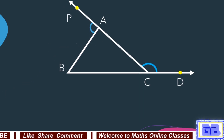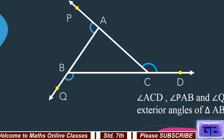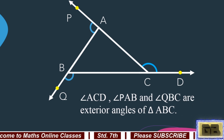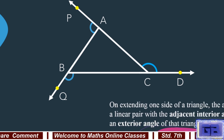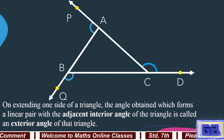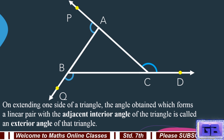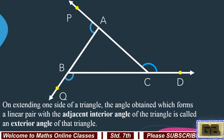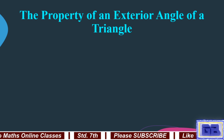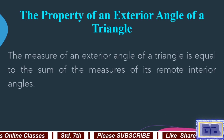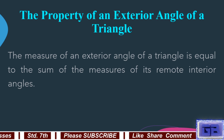Extending other sides, angle PAB and angle QBC are also exterior angles of triangle ABC. On extending one side of a triangle, the angle obtained which forms a linear pair with the adjacent interior angle of the triangle is called an exterior angle of that triangle.